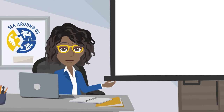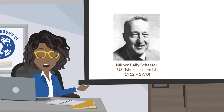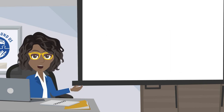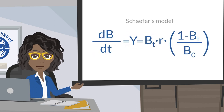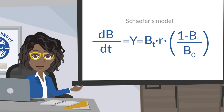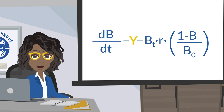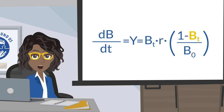Finally, the third scientist you need to know about is Milner B. Schaefer, whose model built on Verhulst's logistic curve but with population numbers replaced by population biomass. Schaefer defined surplus production as yield, whose maximum value is maximum sustainable yield, or MSY. Schaefer's model looks like this: db over dt equals y equals bt multiplied by r multiplied by 1 minus bt over b0. Where db over dt is the growth rate of the population, or yield y, and r is the intrinsic rate of population increase as defined previously, and bt is the biomass at time t.